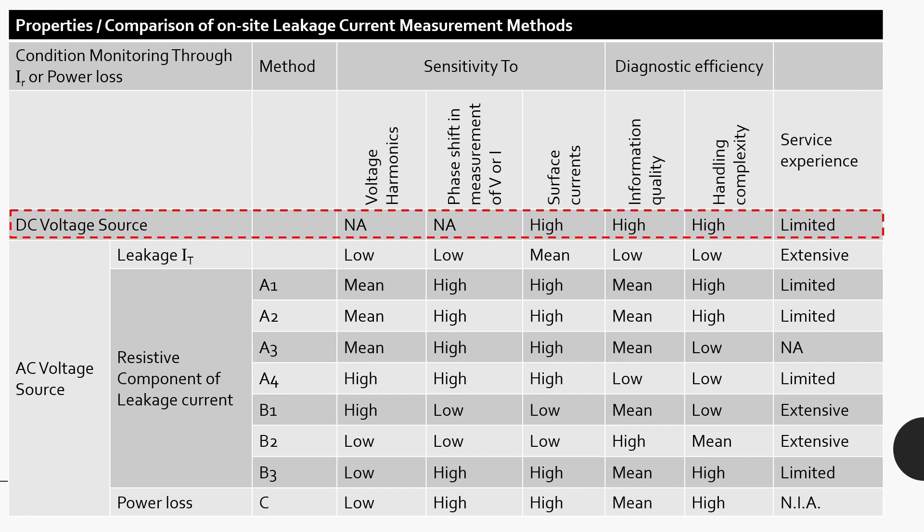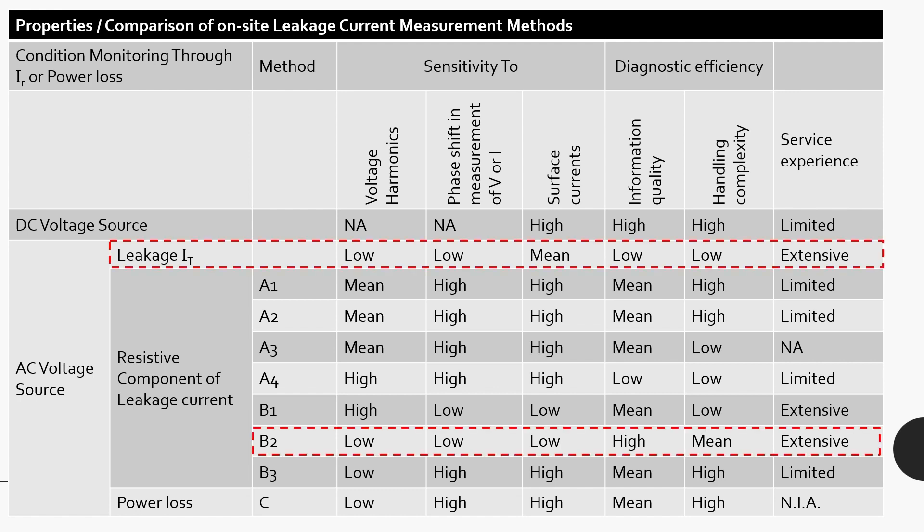Here you can find method of leakage current measurement using DC source. Yes, of course, DC source can be efficient in providing resistive leakage current measurement although the service experience is limited. Out of these, current measurement using leakage current meter and third harmonic leakage current measurement have very extensive site experience.